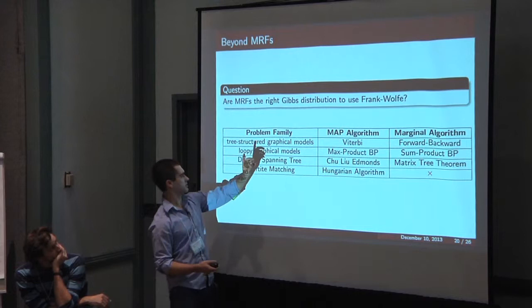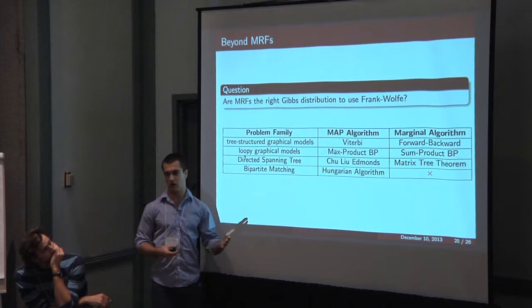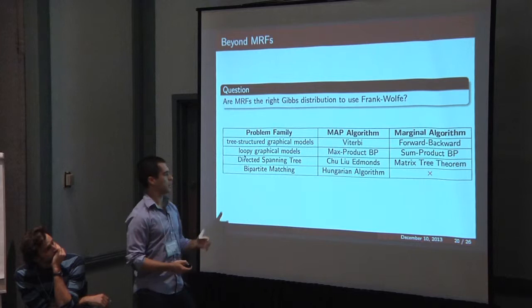Basically here I have a table of problem family, the MAP algorithm, and the associated marginal algorithm. There are these nice counterparts for marginal inference to MAP inference in a lot of families.